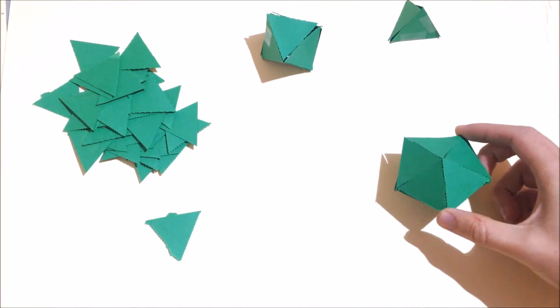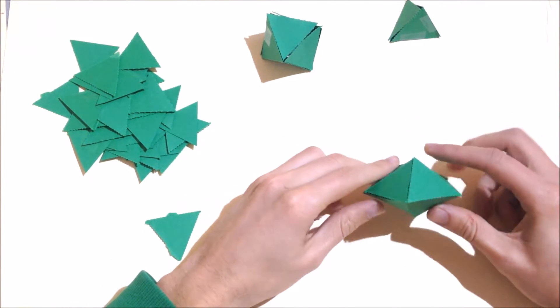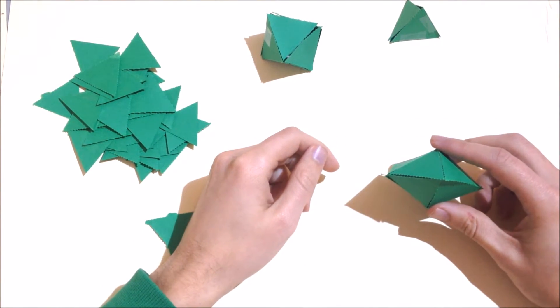When I look at this corner, I see five triangles that come together, but this corner over here only has four triangles that meet.